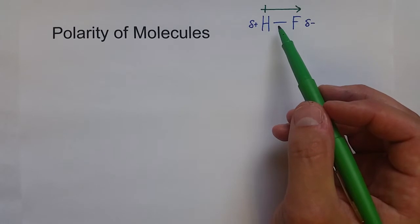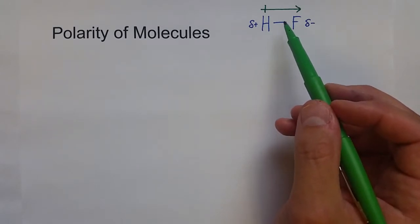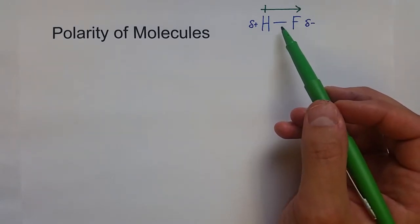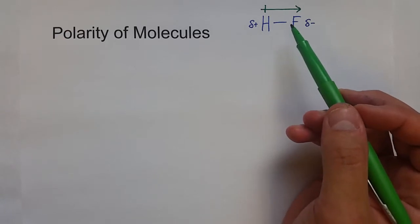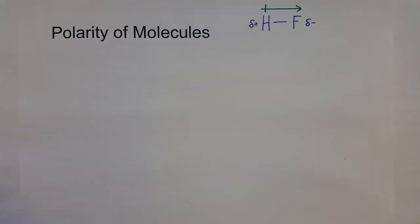So for molecules that just have one bond, it's a very simple question. If it has a polar bond, it's polar. If it doesn't, it's not. When you get to bigger molecules, we also have to take into consideration geometry.